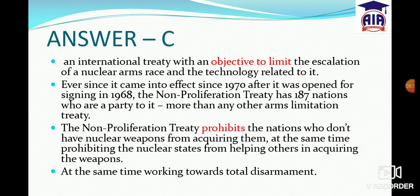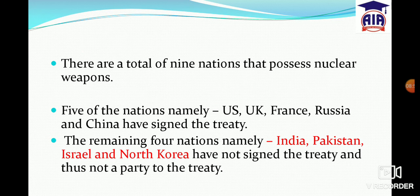Of the nine nations known to have nuclear weapons, five have signed the NPT: USA, UK, France, Russia, and China. India, Pakistan, Israel, and North Korea have NOT signed the NPT.